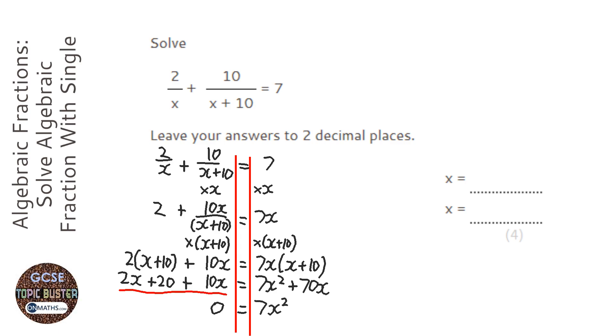So, right, so we've got 10x and 2x. That's 12x. So that would be 58x. And then we've got the minus 20. Now it says it wants its two decimal places, which is a bit of a hint that it's not going to be able to factorise. So I'm going to put this into the quadratic formula.